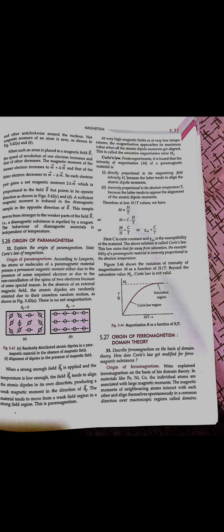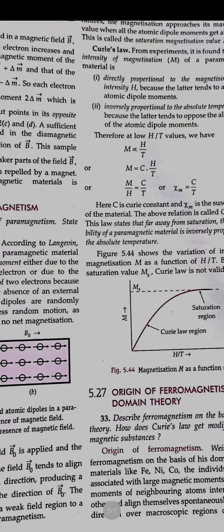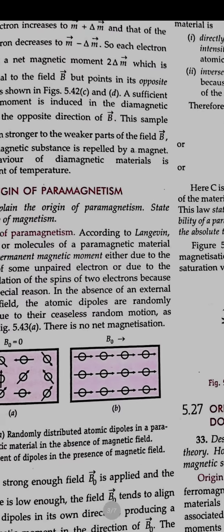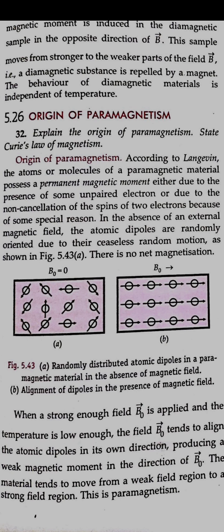This is the origin of paramagnetism. The atomic dipoles present in atoms, in the presence of an external magnetic field, try to possess a permanent magnetic moment. Without a magnetic field, the atomic dipoles are randomly distributed and moving in random directions. When we apply an external magnetic field, they try to align themselves in the direction of the magnetic field, due to which the spin of electrons will not cancel each other.